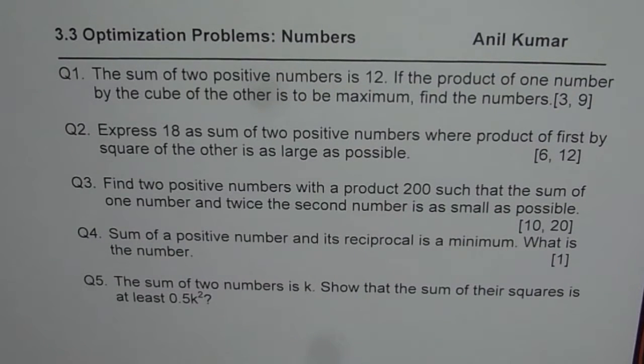Question number 4: the sum of a positive number and its reciprocal is a minimum. What is the number? The answer is 1.